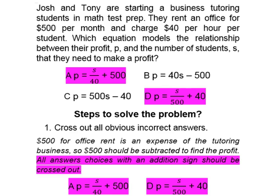So let's look at answer choice D. They have P is equal to S, which stands for students, divided by 500 plus 40. That's incorrect as well because we don't need to divide the number of students by 500 — that's an expense and should be subtracted. So we can cross out A and D.